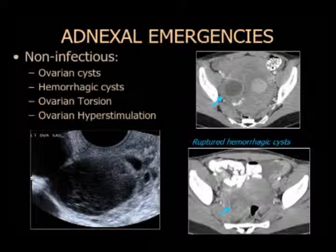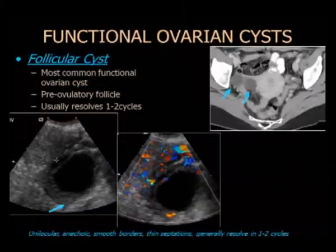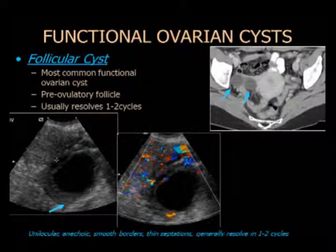Pasemos a las emergencias anexiales. Hablaremos de las no infecciosas antes de las infecciosas: quistes ováricos, quistes hemorrágicos, torsión, e incluso la hiperestimulación. Hay que recordar el aspecto normal en estas imágenes. Los quistes foliculares son muy comunes en el folículo preovolatorio; esto remite en un par de ciclos. En la TAC, si está bien definido y no se ve pared, esto remite con seguimiento.